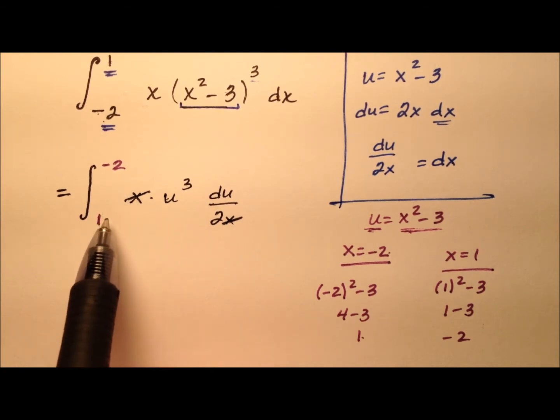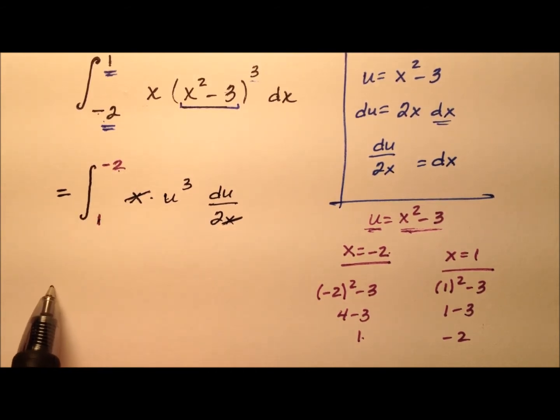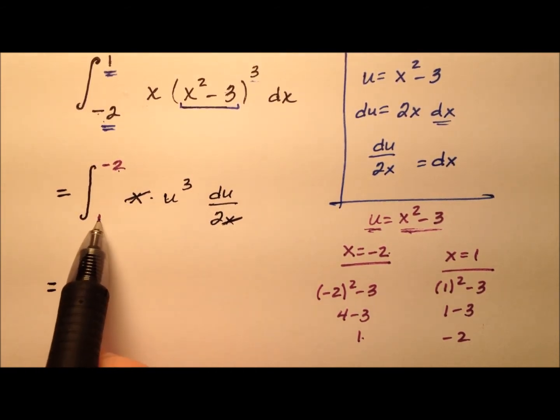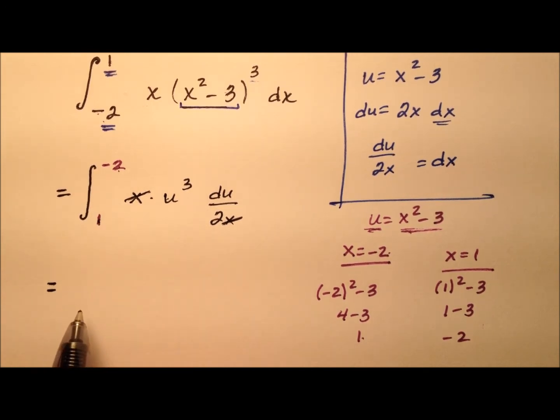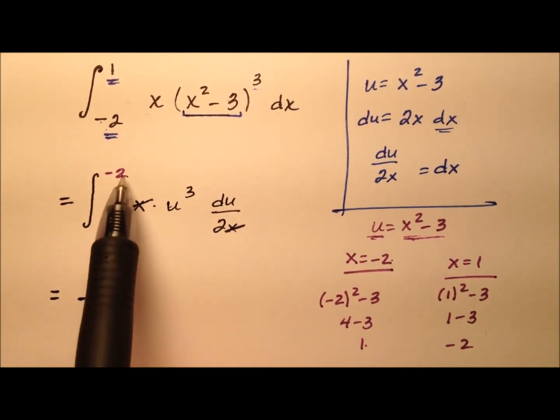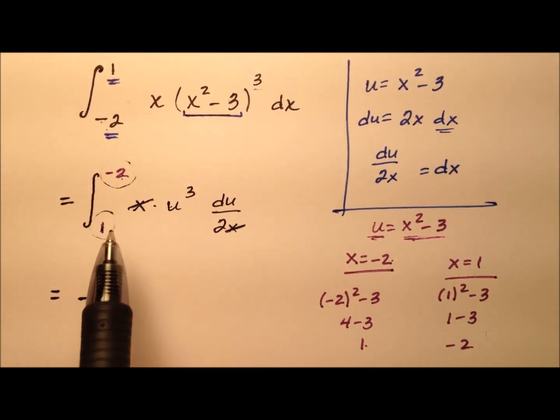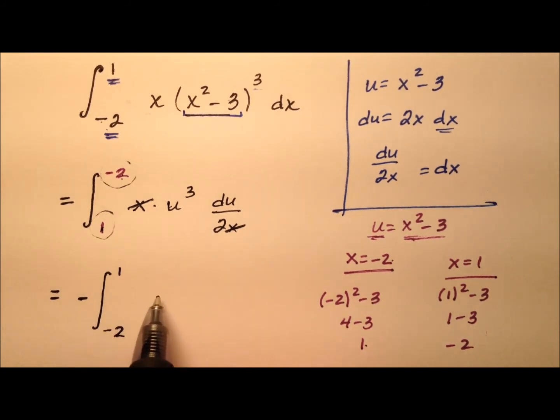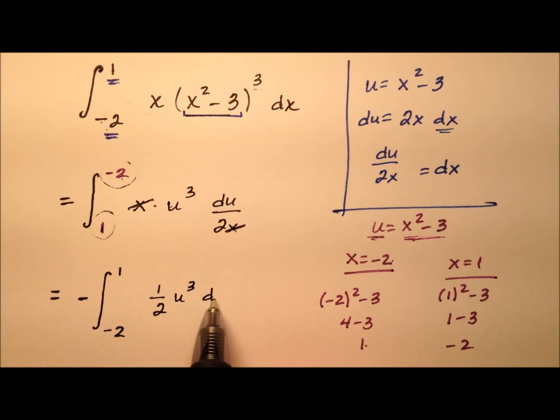So we could do a couple of things. Notice the limits of integration, the 1 goes to a negative 2. They're kind of backwards, aren't they? So we could switch them so it's small to large. And of course, we can do that using the properties of integration, but we'll need to put a negative out front. So we have the opposite of the integral from negative 2 to 1, and I just switched these limits of integration. And here it looks like we have 1 half u cubed du.